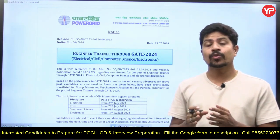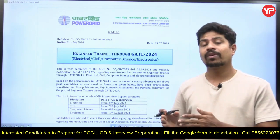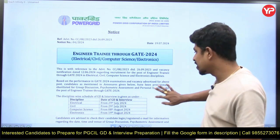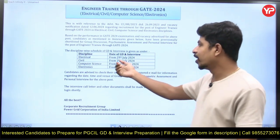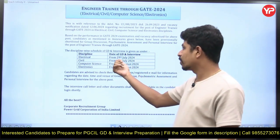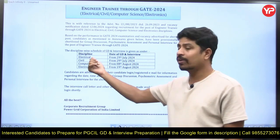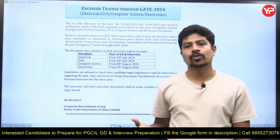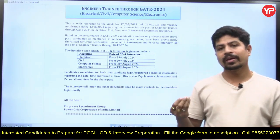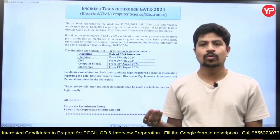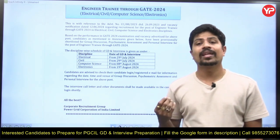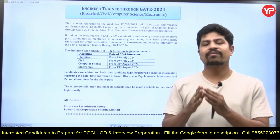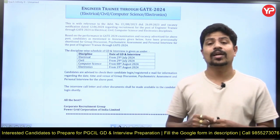The electrical interview dates are from 29th of July onwards. Here you can see the date of GD and interview will be from 29th of July 2024 for the electrical branch. In this video, I am going to tell you how to prepare for the power grid interview in the branch of electrical engineering.